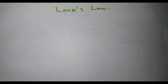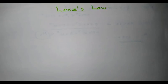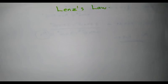Good evening. In the previous class, we learned about Faraday's laws — Faraday's first law and Faraday's second law. Faraday's first law gives the principle of electromagnetic induction: whenever there is a change in magnetic flux linking with a coil, an EMF is induced in it. Faraday's second law gives the magnitude of this induced EMF — that is, the magnitude of induced EMF is directly proportional to the rate of change of flux linkage.